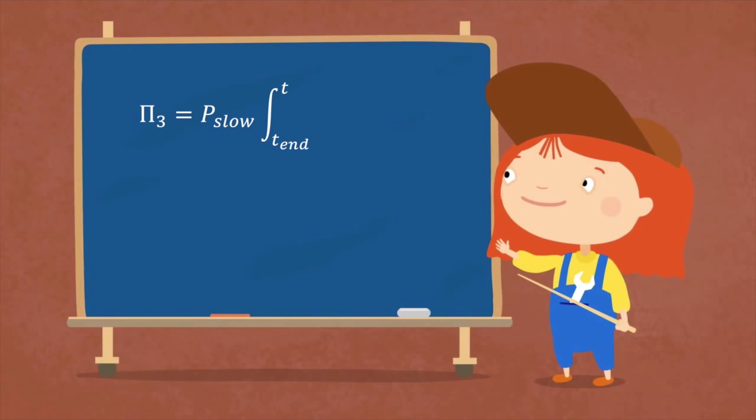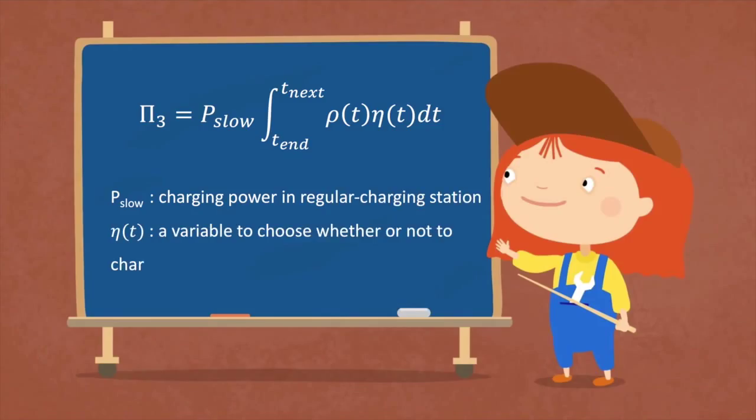Finally, Pi-3 is the regular charging cost, where P-slow is the regular charging power, and η-T defines the variable to decide whether to charge the EV, and it's either 1 or 0.